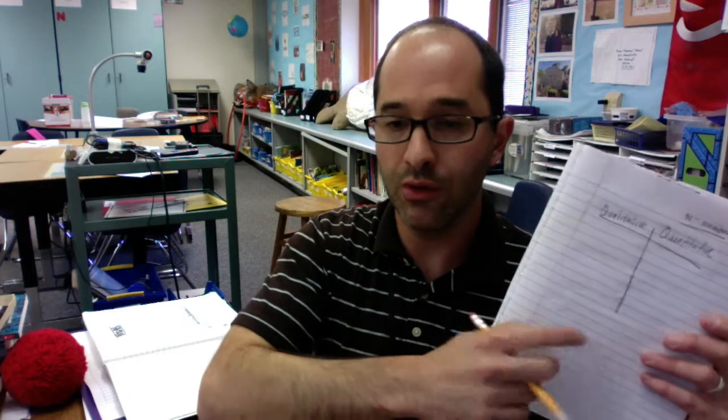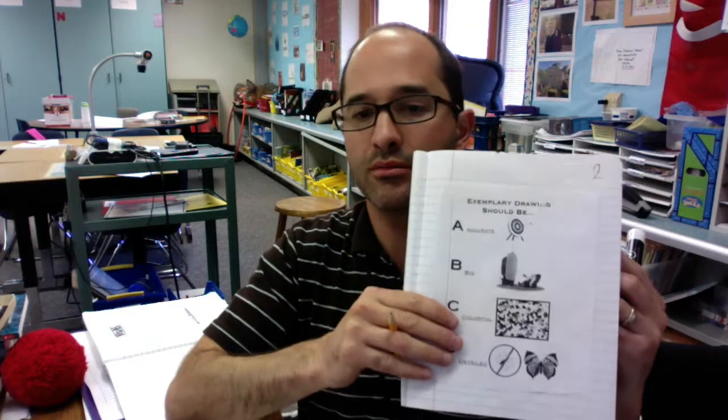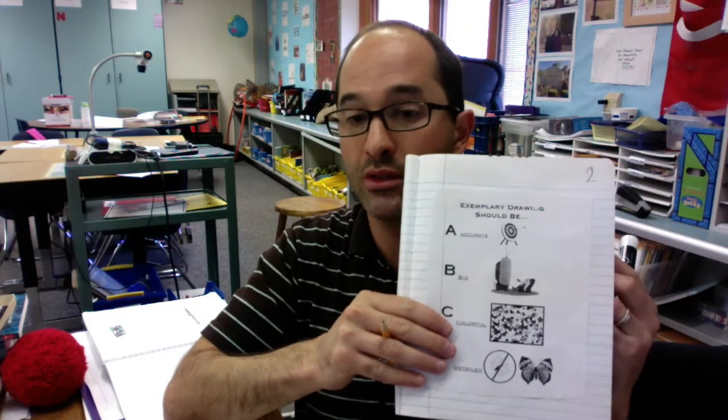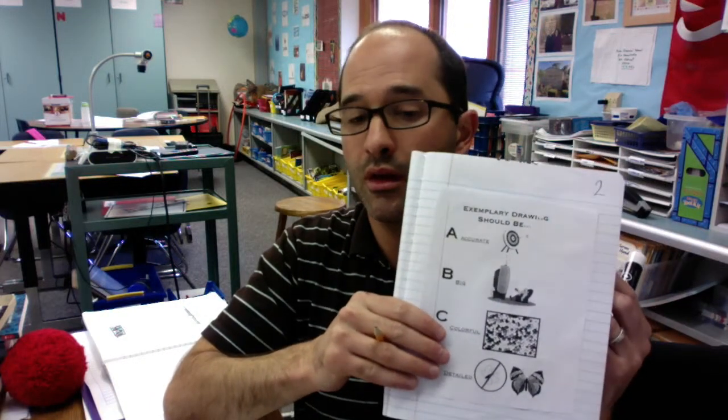When you're done, I would like you on the bottom to try to make a sketch of your penny. Remember to use the A, B, C, D checklist in your notebook on page 2. Make it an accurate, big, colorful, and detailed, very detailed sketch of your penny. When you're done, you can read quietly. Do your best, scientists. I can't wait to see your notebooks. Thank you.